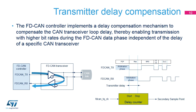The transmitter delay compensation enables configurations where the data bit-time is shorter than the transmitter delay. It is enabled by setting bit TDC in the DBTP register. The received bit is compared against the transmitted bit at the secondary sample point. The SSP position is defined as the sum of the measured delay from the FDCAN transmit output pin FDCAN-TX through the transceiver to the receive input pin FDCAN-RX, plus the transmitter delay compensation offset, which is used to adjust the position of the SSP inside the received bit, e.g. half of the bit-time in the data phase.